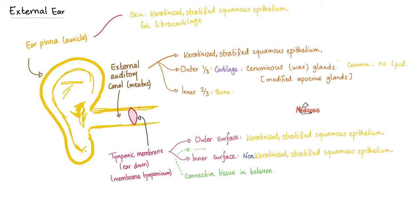The external ear includes the ear pinna or auricle, then the external auditory canal or meatus, then the membrana tympanicum — or tympanic membrane, or the eardrum. Who said that doctors are not creative?